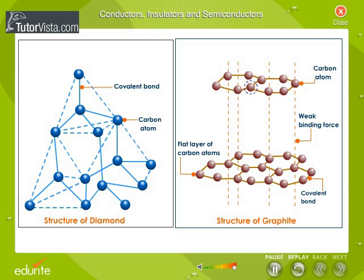In Graphite, each Carbon atom is bound to only three other Carbon atoms. Due to this, one valence electron is unused in bond formation. This free electron is available for conduction.